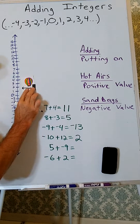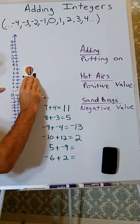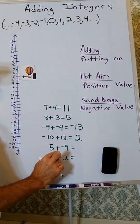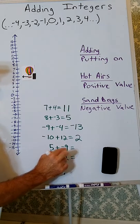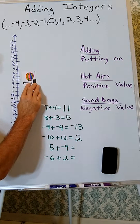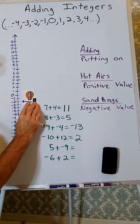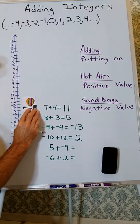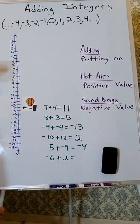5 plus negative 9. The 5 hot airs will make the balloon go up to 5. We're adding negative 9 — we're putting on 9 sandbags. So the balloon will go down because it gets heavier, going down 9. So 5 plus negative 9 is negative 4.